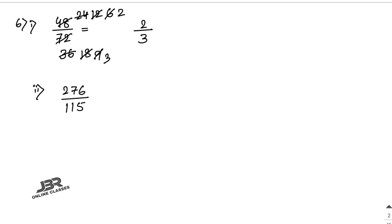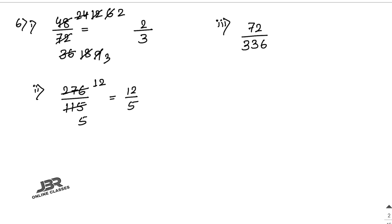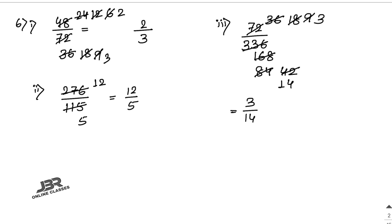For number 2, 276 by 115: divide both by 23. 276 divided by 23 is 12, and 115 divided by 23 is 5. So the answer is 12 by 5. For number 3, 72 by 336: divide by 2 to get 36 by 168, then 18 by 84, then 9 by 42, then 3 by 14. So the final answer is 3 by 14.